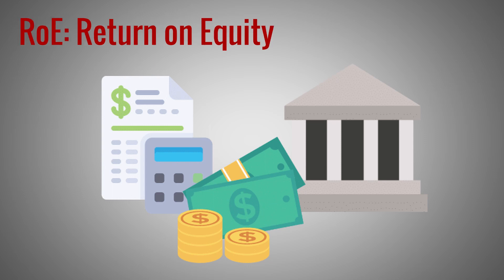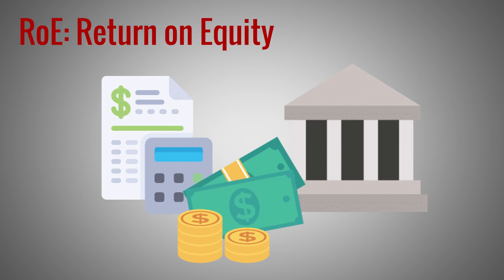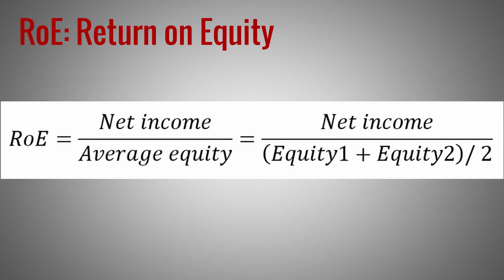Return-on-equity is the most important financial performance ratio. The ratio itself is simple: net income after tax divided by the average equity. The net income is the profit available to shareholders after all costs, interests, taxes, and so on have been paid. We calculate the average equity by adding the equity values for the beginning and the end of the period, divided by two.